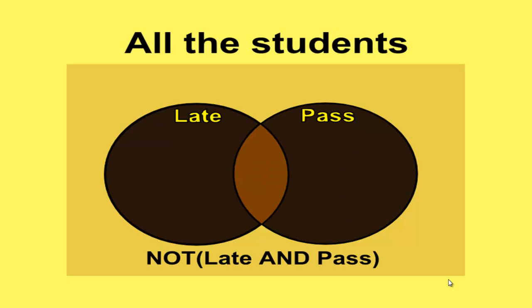Now what about making things a little more complicated? In this diagram, we're looking at those students who are late and pass, and then using the NOT. In other words, we're looking at those who are either late and fail, or pass and are on time. But not both.